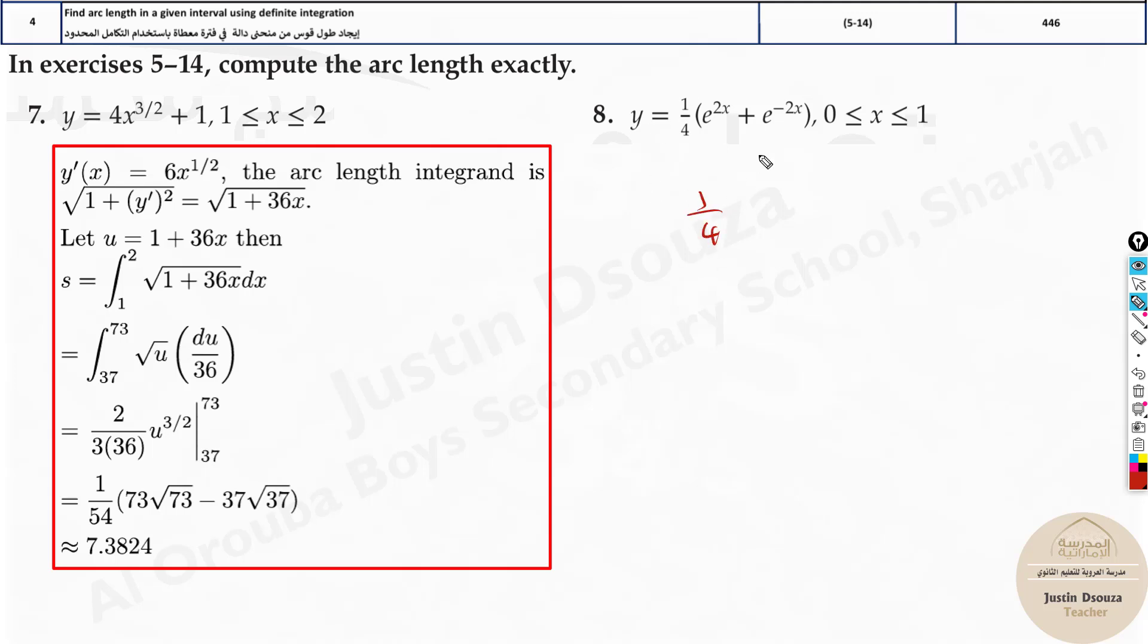Here also, just remember to derive it properly. e to the power 2x derivation is e to the power 2x times chain rule, this one. Over here e to the power minus 2x times minus 2. Don't forget that. And over here there's nothing else. I'll leave 1 by 4th out itself.